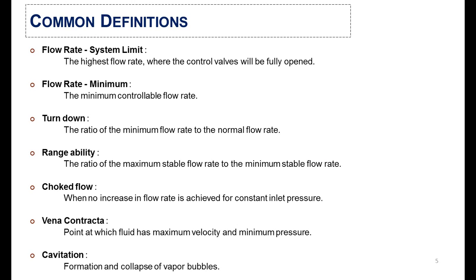There are some common definitions required before moving to the sizing of the control valve. The first one is the flow rate: the highest flow rate where the control valve will be fully opened is called the system limit flow rate. The second is the minimum flow rate that can be controllable by the valve. The third definition is about turn down: the ratio of the minimum flow rate to the normal flow rate is called turn down.